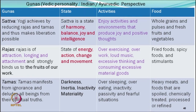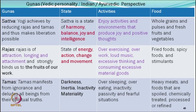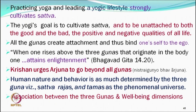Comparing the three gunas, Satvik guna is the best one and we strive for a Satvik living style. Practicing yoga and leading a yogic lifestyle is strongly connected with Satva guna and cultivates Satvik style. The yogi's course is to cultivate Satva and to be unattached to both good and bad, positive and negative qualities of all lives. When we are in Satvik mode, we are more balanced — not extremely positive or negative, not extremely good or bad.